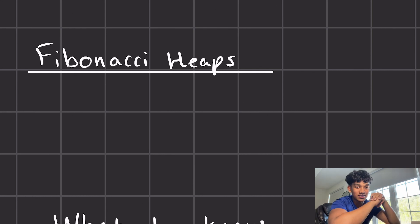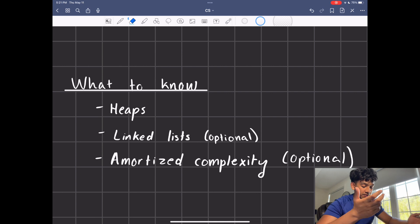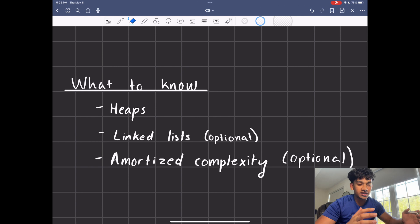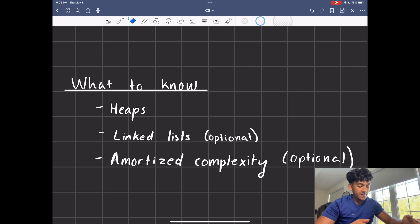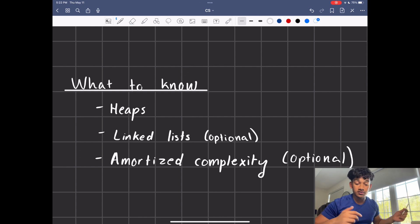Welcome back, hope you guys are having a great day. Today we're going to be talking about Fibonacci heaps. Here's some stuff you should know: heaps — I do have a video on that so you can check that out. Linked lists are kind of optional, that's more about the data structure itself. Amortized complexity is also optional; it's mainly there to understand the benefit of Fibonacci heaps compared to regular heaps. If you just want to understand how it works, that's what I'm going to be talking about.